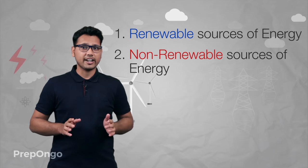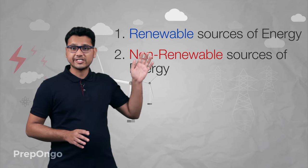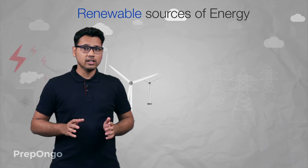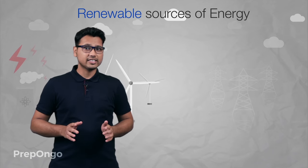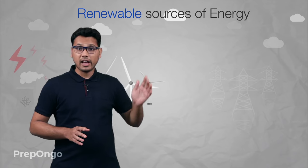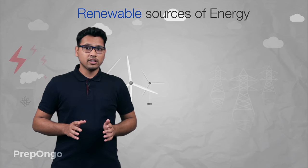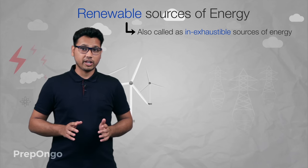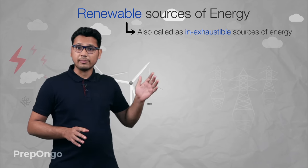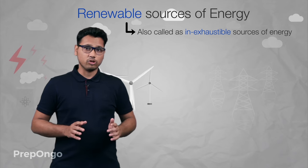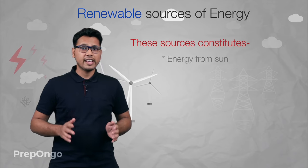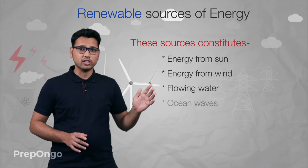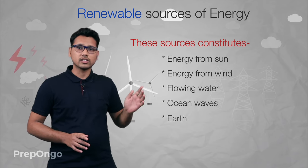Let us first understand what renewable sources mean. As the name suggests, these are the sources which can be regenerated, or we can say that their supply is unlimited. They are also called inexhaustible sources of energy because we can get energy from them for an indefinite amount of time. These sources constitute energy from the Sun, from the wind, from flowing water, from ocean waves, or the earth.